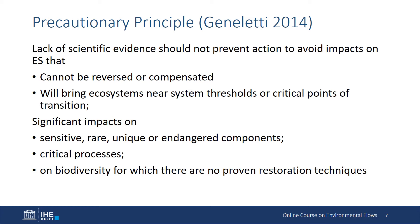Significant impacts might be, for example, changes that will bring ecosystems near system thresholds or critical points of transition from which they could not recover — in other words, changes that will affect the resilience of ecosystems. Significant impacts occur when valued components will be affected. In the case of e-flows, that could include modifying flow regimes outside of the natural range of variation required by sensitive, rare, unique, or endangered components, being them living or non-living.